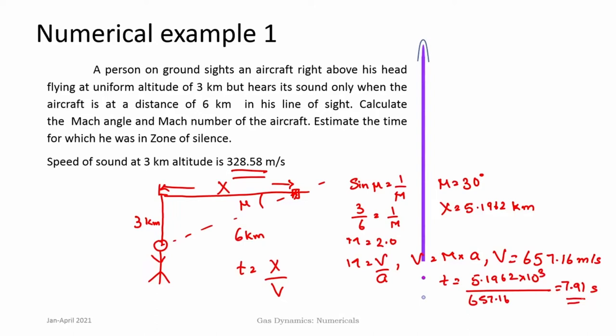This is related to the concept of Mach angles and the fact that in supersonic flows one cannot know that an object is passing right at the moment it is at that position, but only at a later time when the Mach wave passes over that particular point. So there are definite directions of propagation of information in a supersonic flow — that is the important concept here.